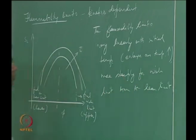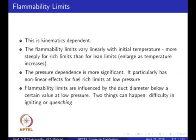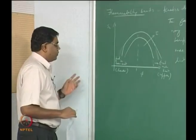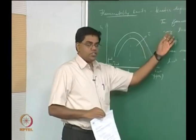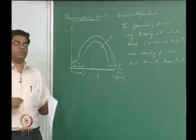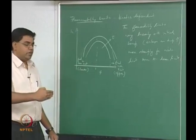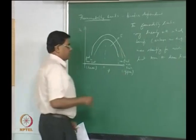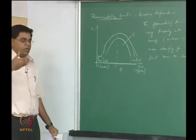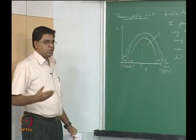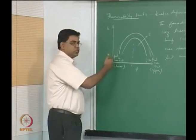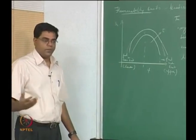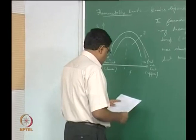The limit here is the equivalence ratio or the fuel-air mass ratio. With a linear variation, if at 300K you have a lean limit and you know the slope of the line connecting temperature with the lean limit, you can predict what the lean limit should be at, say, 400K — how it should decrease and so on.